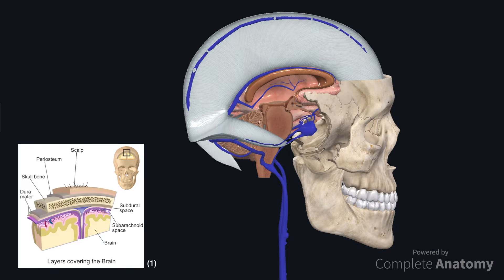The two layers are an outer periosteal layer, shown in grey on the diagram, and an inner meningeal layer which is shown in cream on this diagram. Usually these layers are fused together except for where the meningeal layer reflects from the periosteal layer to form partitions between different areas of the brain.